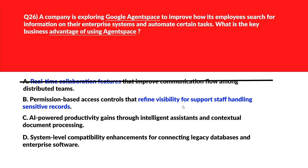Option B says permission-based access control that refines visibility for support staff handling sensitive records. Access control is managed by Identity and Access Management, not by enterprise search functionality — wrong answer. Option C says AI-powered productivity gains through intelligent assistance and contextual document processing. Semantic search and AI assistance enhance productivity through document interaction. Let's keep Option C.